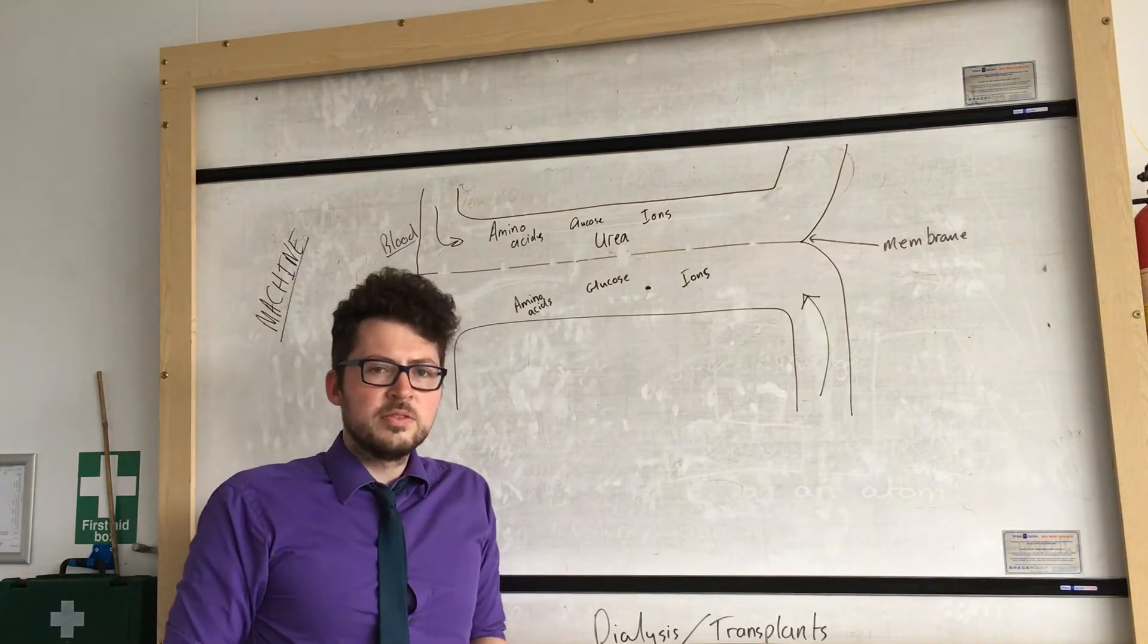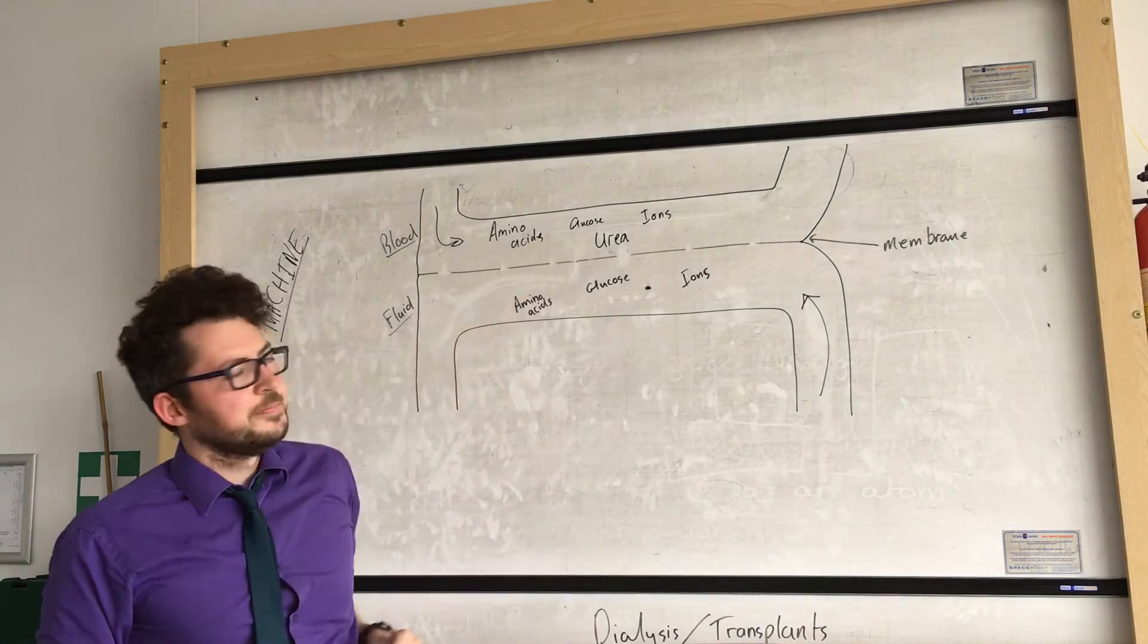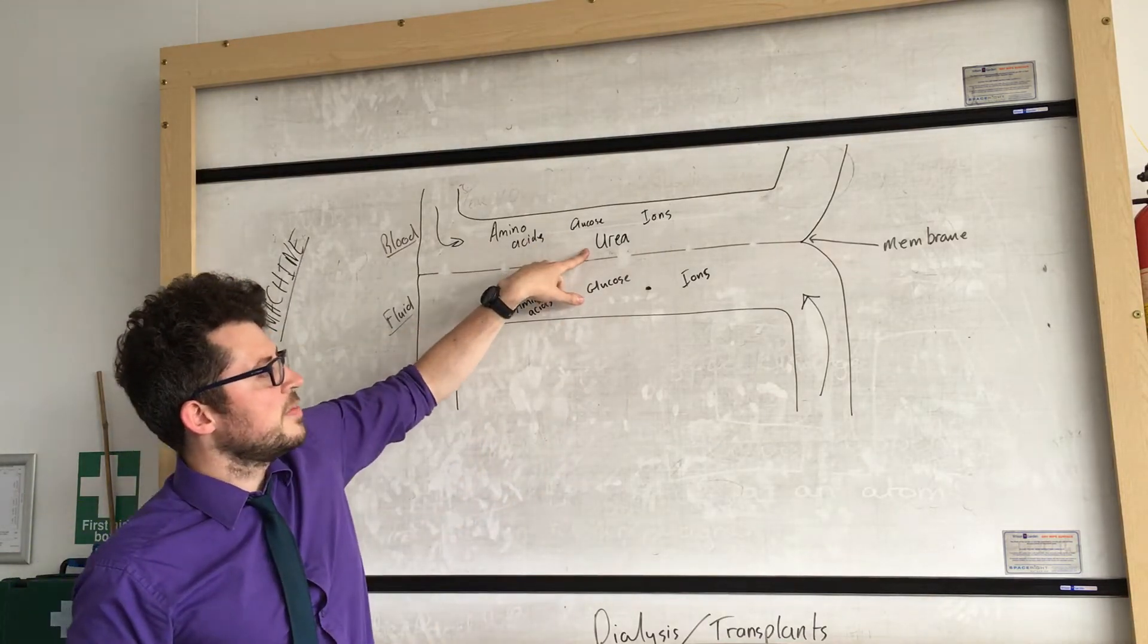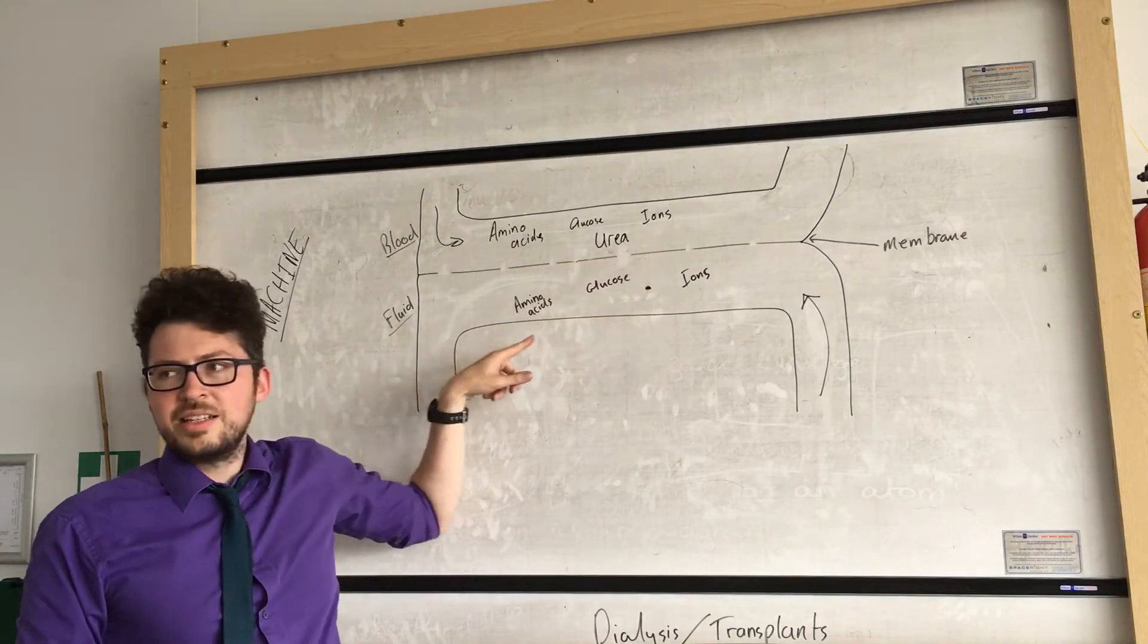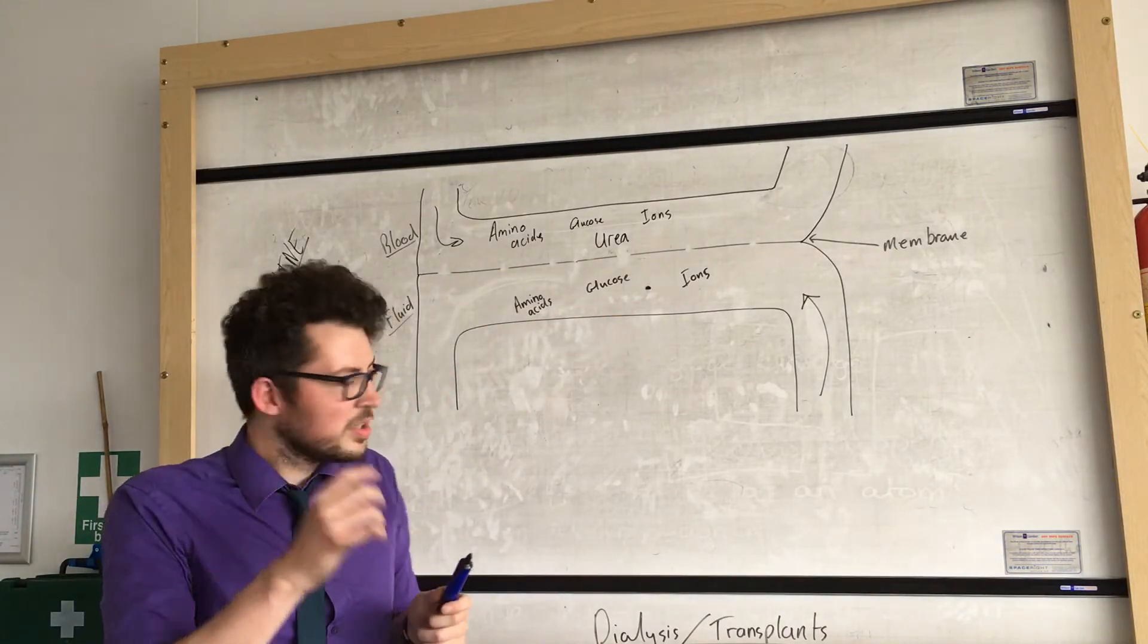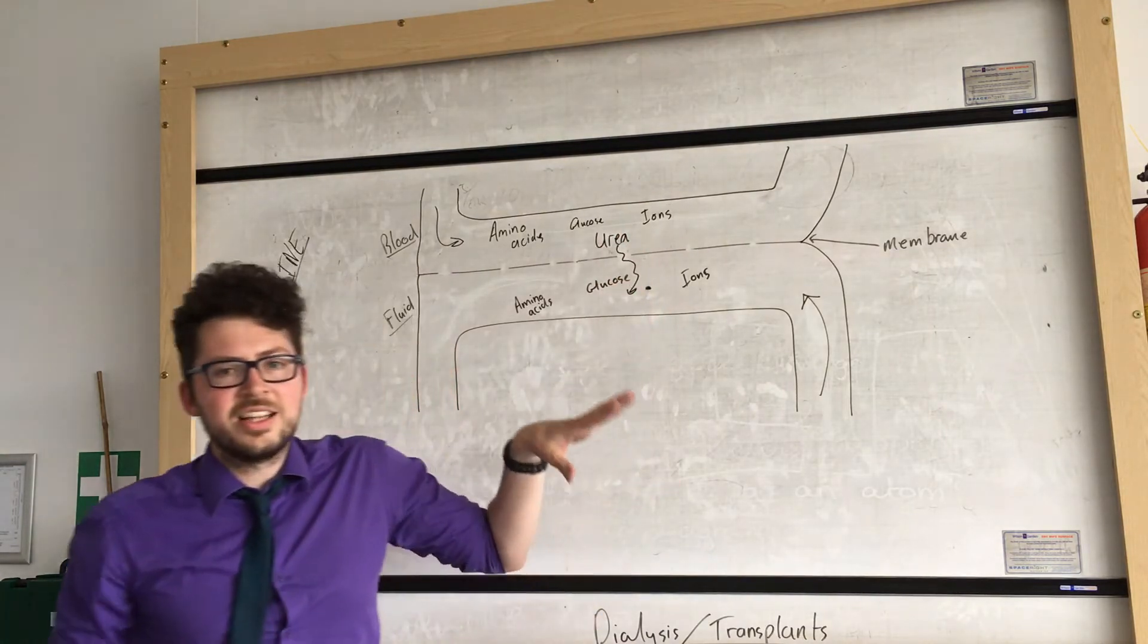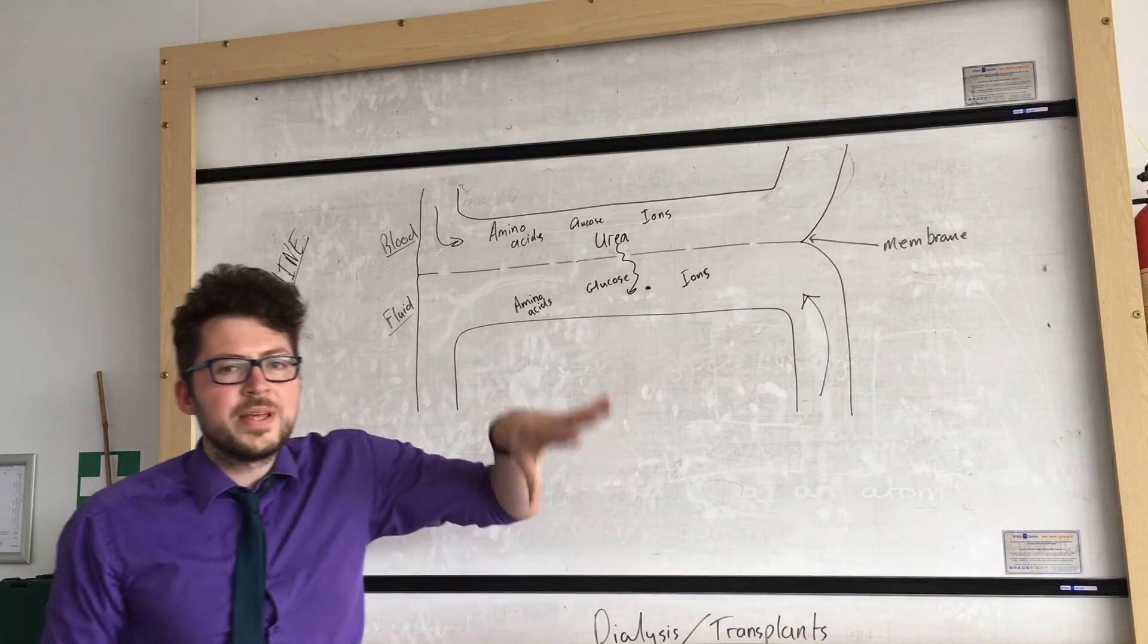We only want to remove one material from that person's blood and that is urea. So you can see in the bloodstream there's urea and there's no urea in the fluid. This means that the urea can diffuse out of the blood into the dialysis fluid and then would be carried away.